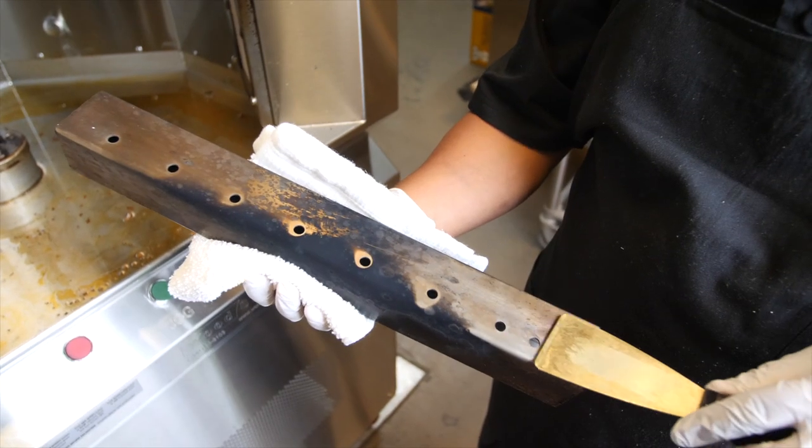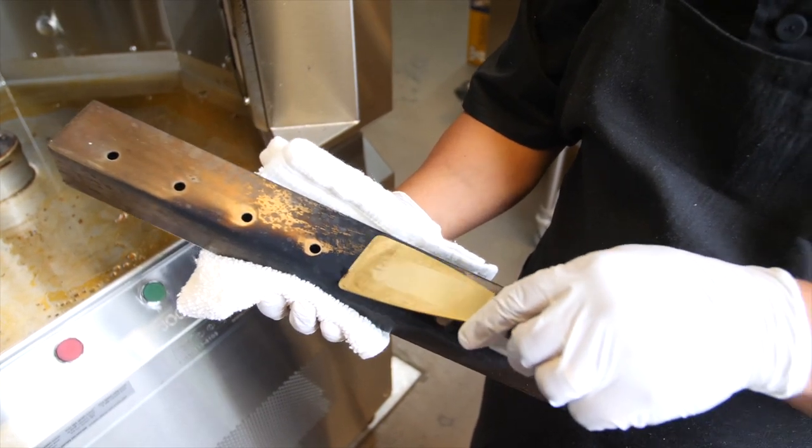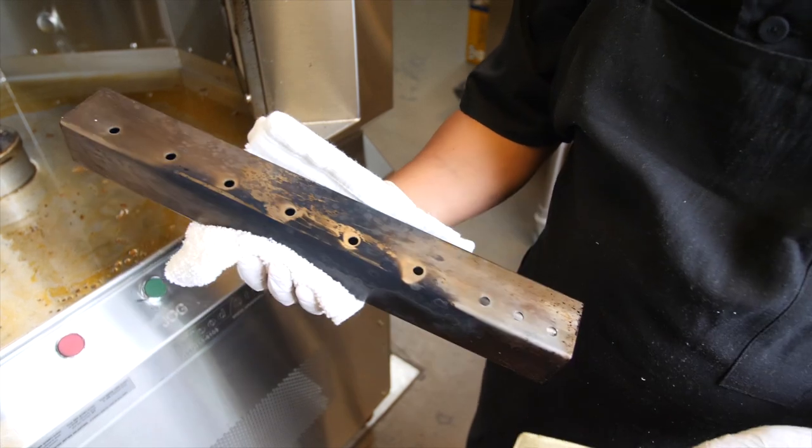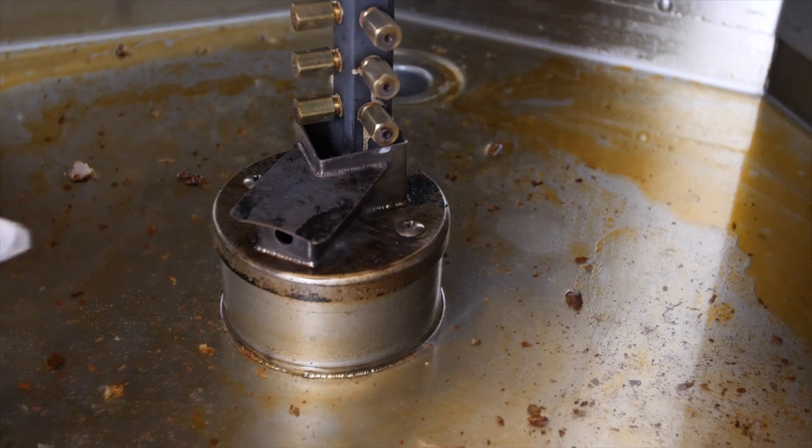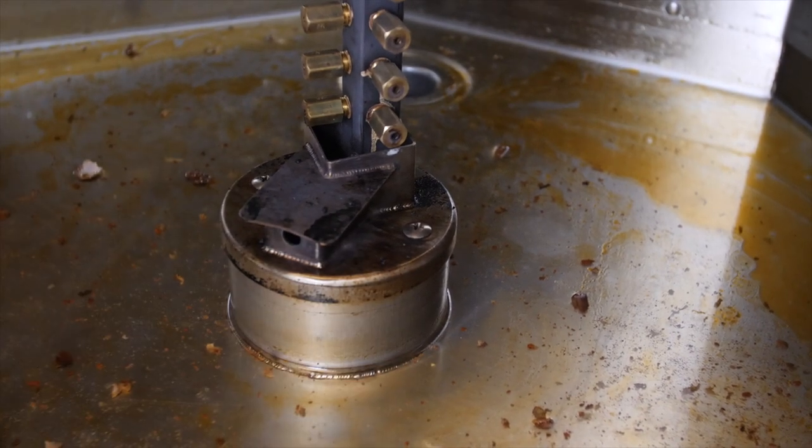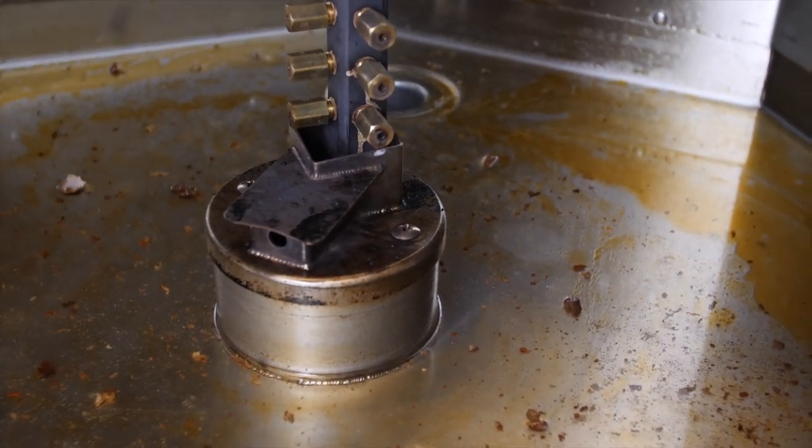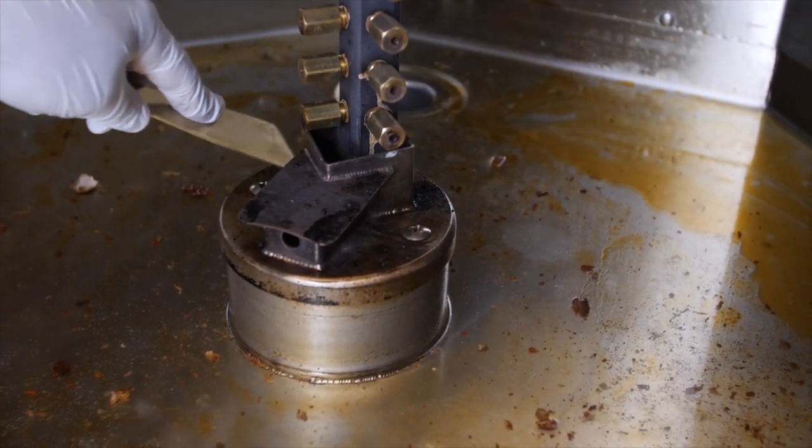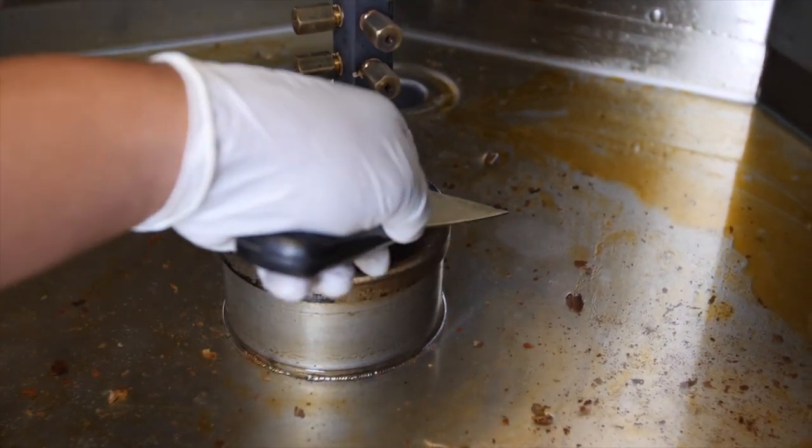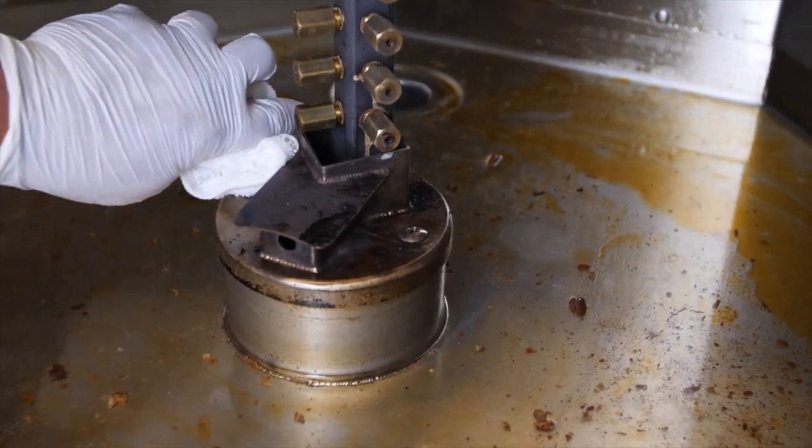I would recommend scraping off any excess buildup with a scraper tool like this, and then you can send the rest to the dish machine. With your burner cover removed, you may notice some buildup at the base of the burner. You can take your scraper tool and clean that area up as well. Remove any excess debris and then wipe it down with a towel.